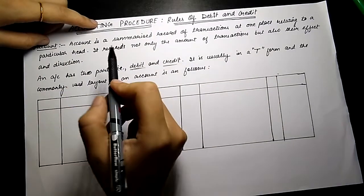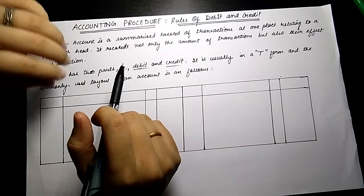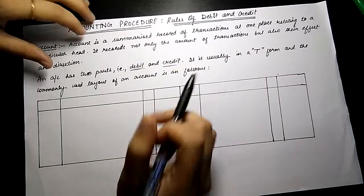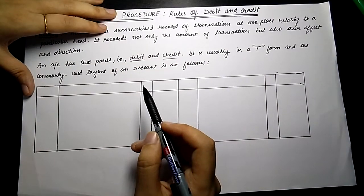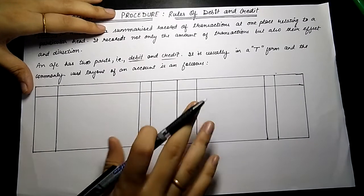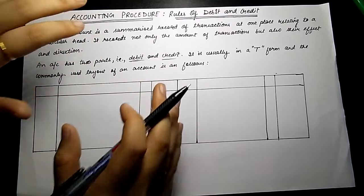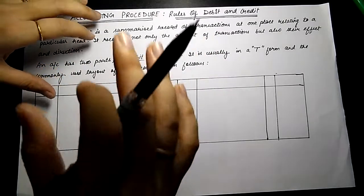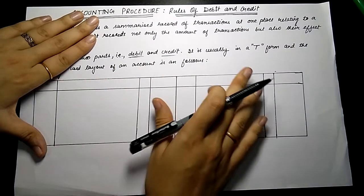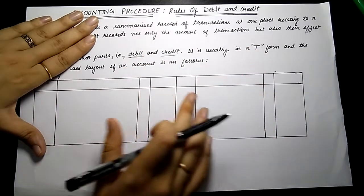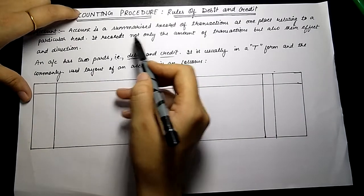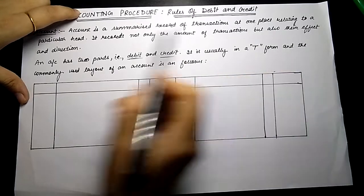So now, what is an account? An account is a summarized record of transactions at one place relating to all the transactions relating to a particular head. For example, if we are making a cash account, in our daily business we do many transactions with cash. We will write all those transactions under one head, under one box — we will call it an account, a cash account. It records not only the amount of transactions but also their effect and direction.